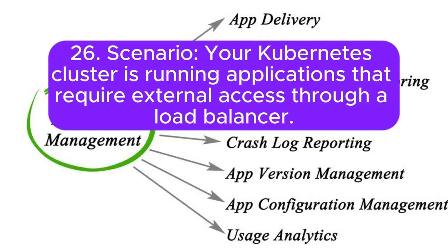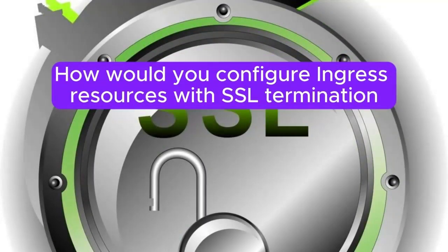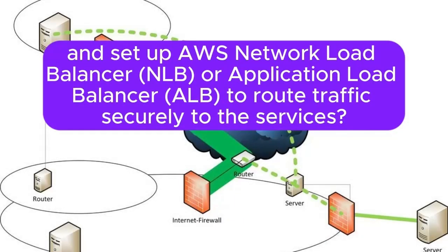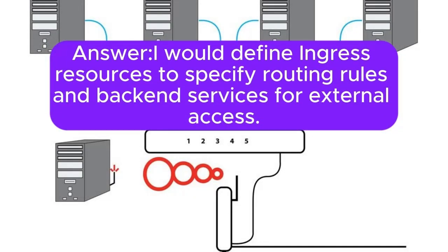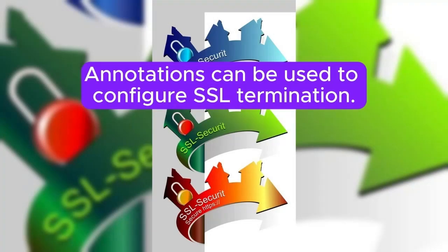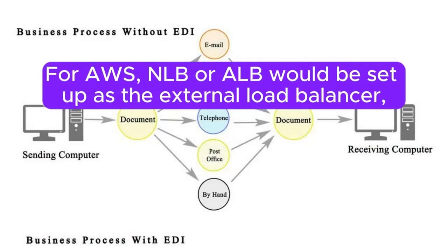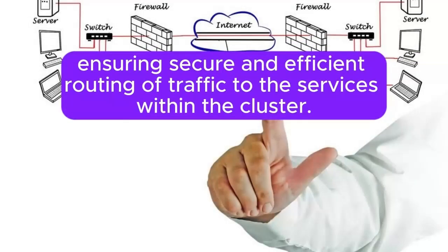Scenario 26: Your Kubernetes cluster is running applications that require external access through a load balancer. How would you configure ingress resources with SSL termination and set up AWS Network Load Balancer (NLB) or Application Load Balancer (ALB) to route traffic securely to the services? Answer: I will define ingress resources to specify routing rules and backend services for external access. Annotations can be used to configure SSL termination. For AWS, NLB or ALB would be set up as the external load balancer, ensuring secure and efficient routing of traffic to the services within the cluster.